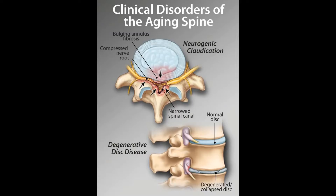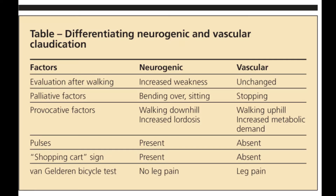The patient gives a classical history of neurogenic claudication pain, in which the patient complains of tingling, numbness, and radicular pain with heaviness in both the lower limbs as soon as the patient stands and starts walking. Because in this position, the spine is in an extended position, in which the dimension of the spinal canal and the neuroforamina are reduced.